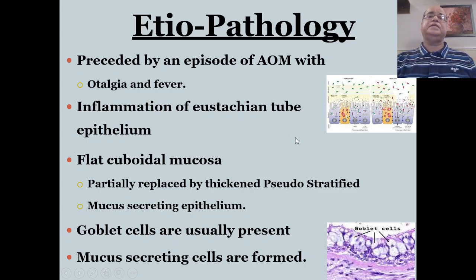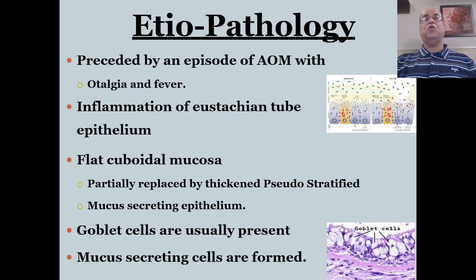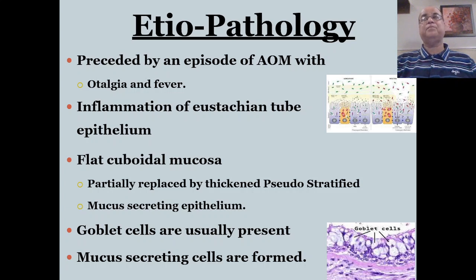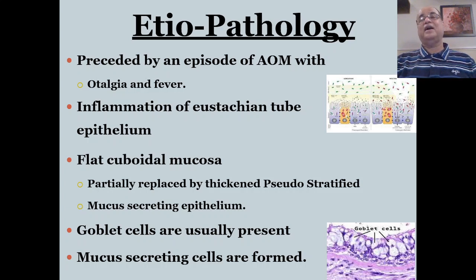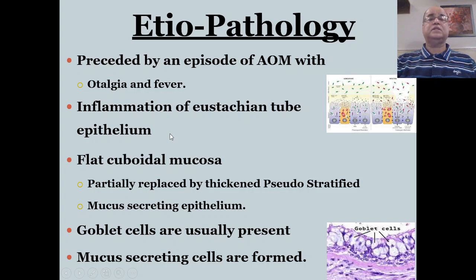It is usually preceded by an episode of acute otitis media — you can say this is a sequela of acute otitis media. The patient was having otalgia and fever, treatment was given, the disease was at a pre-suppurative stage and constitutional symptoms settled down, but still the transudate remains accumulated in the middle ear cavity. Inflammation of the eustachian tube epithelium due to any cause is a very important predisposing factor.